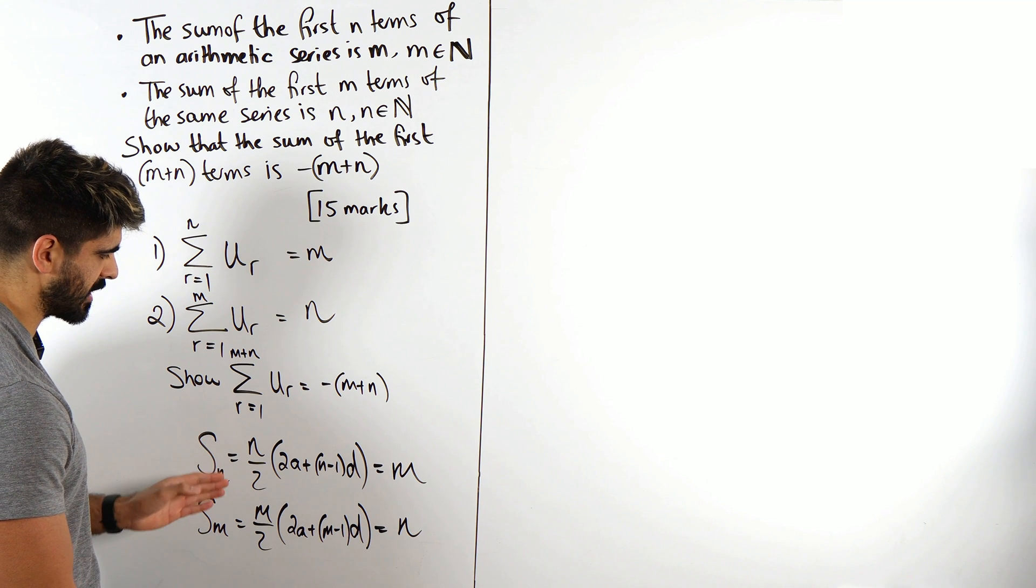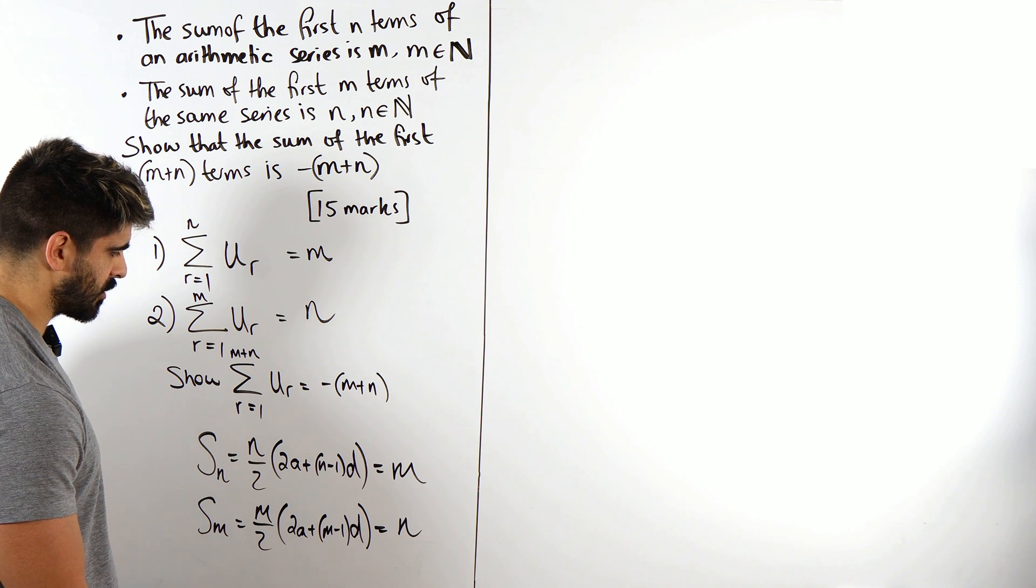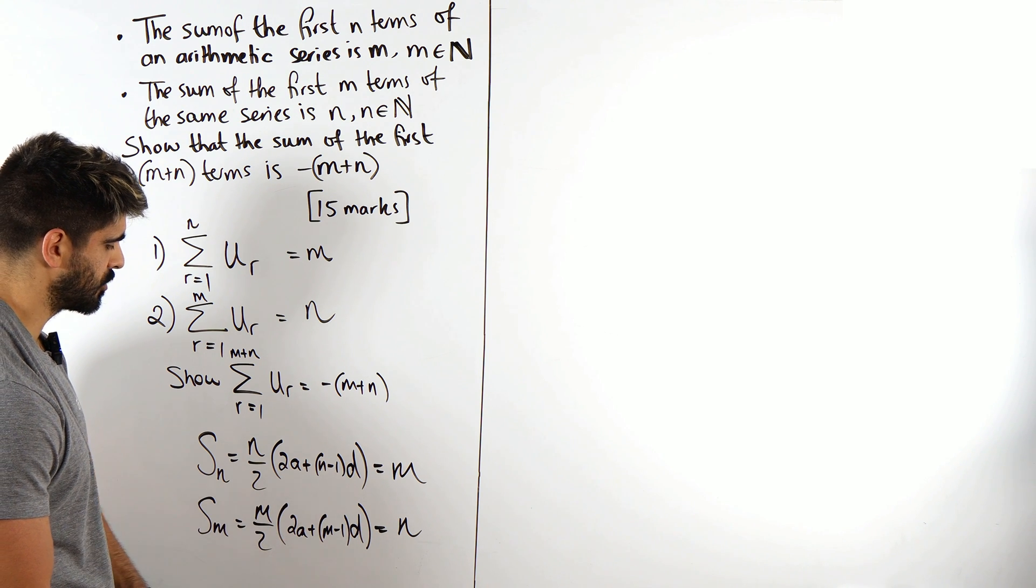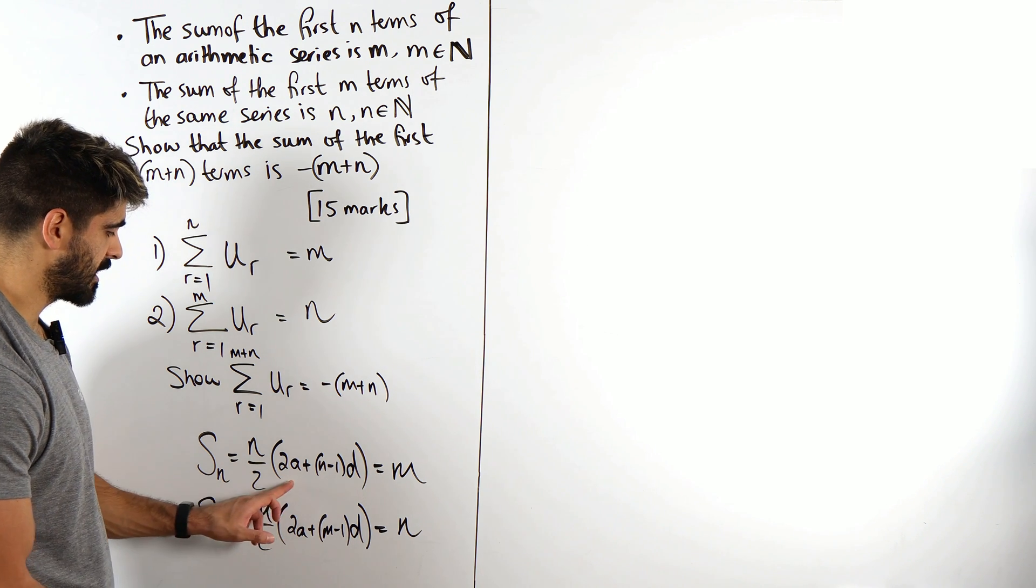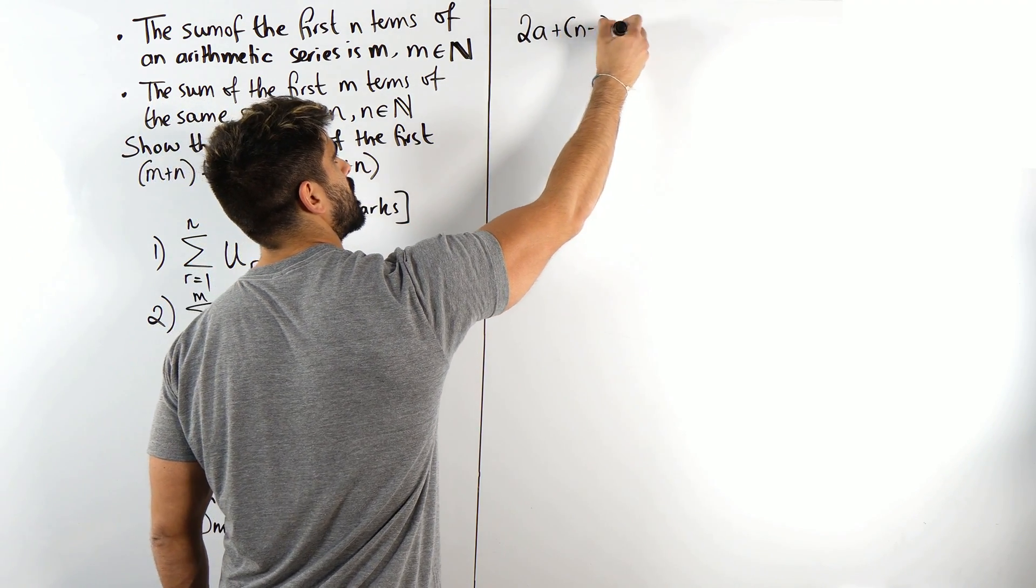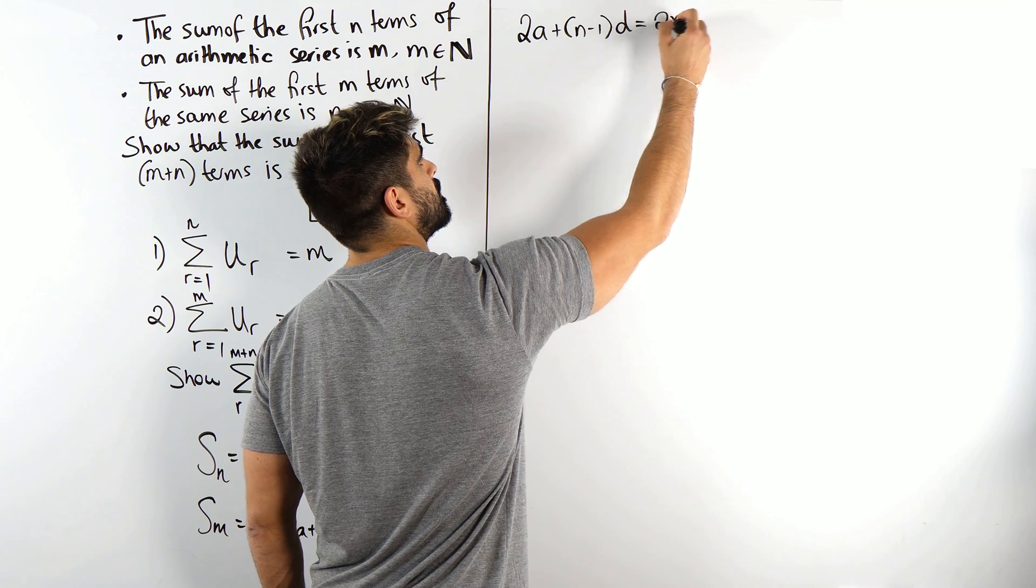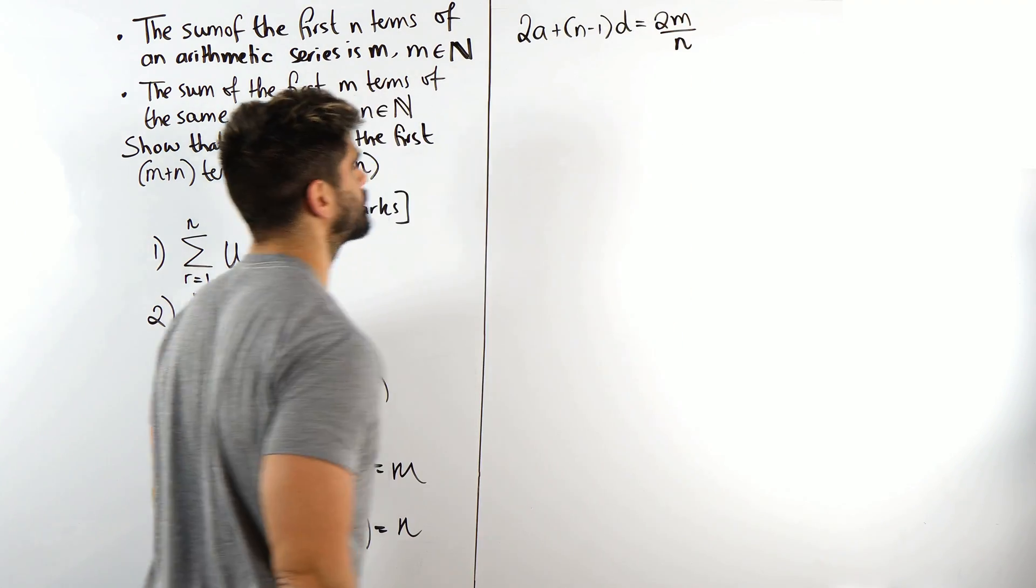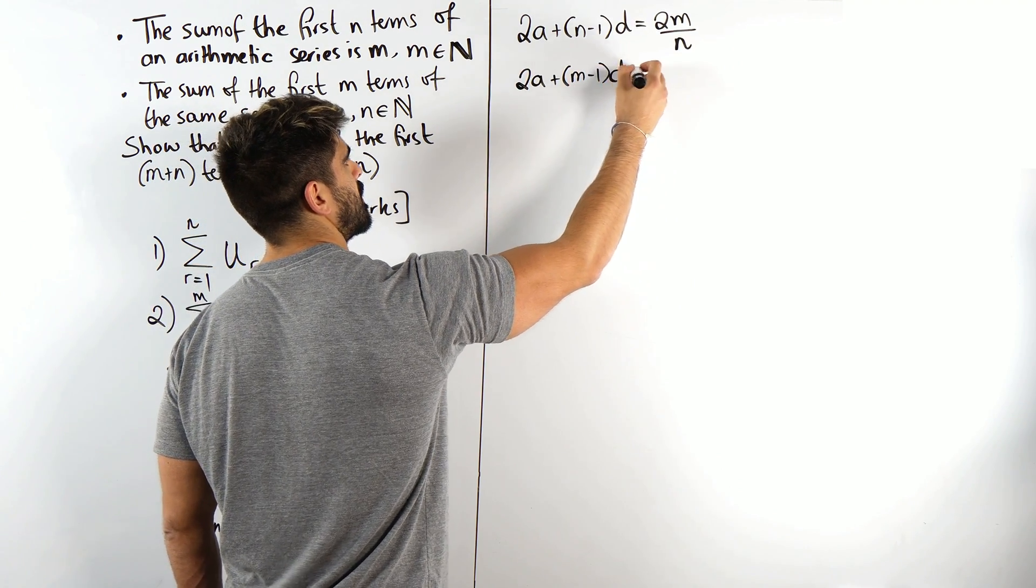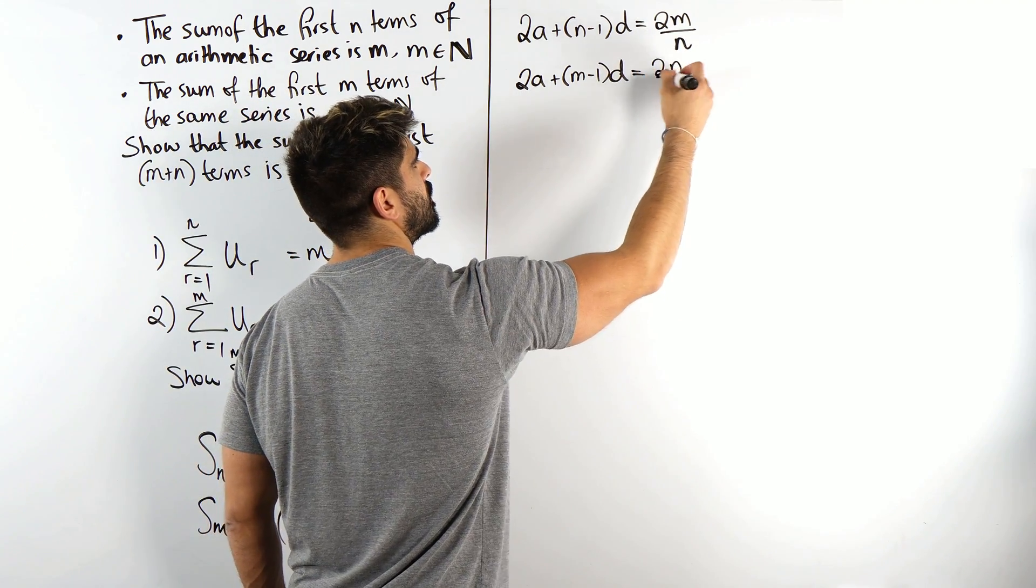So that's looking at the sum of n terms. So this is m, which means this one would be the sum of m terms, would be m over 2 times 2a plus m minus 1 times d, and that equals n. So with both of these, we're somehow going to have to solve it to work out a and d.